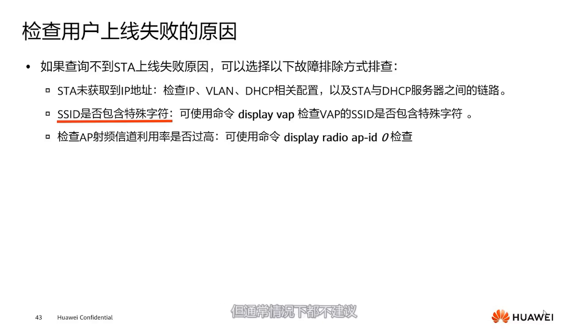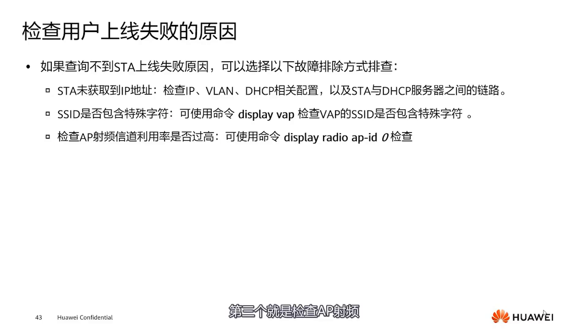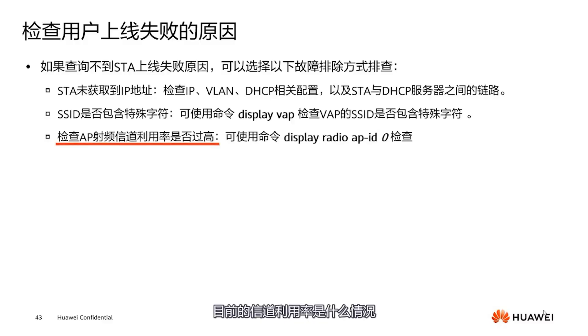The third thing is to check the AP's RF. If the channel utilization is too high, check what the current channel utilization rate is. This is a common reason for user connection failures.